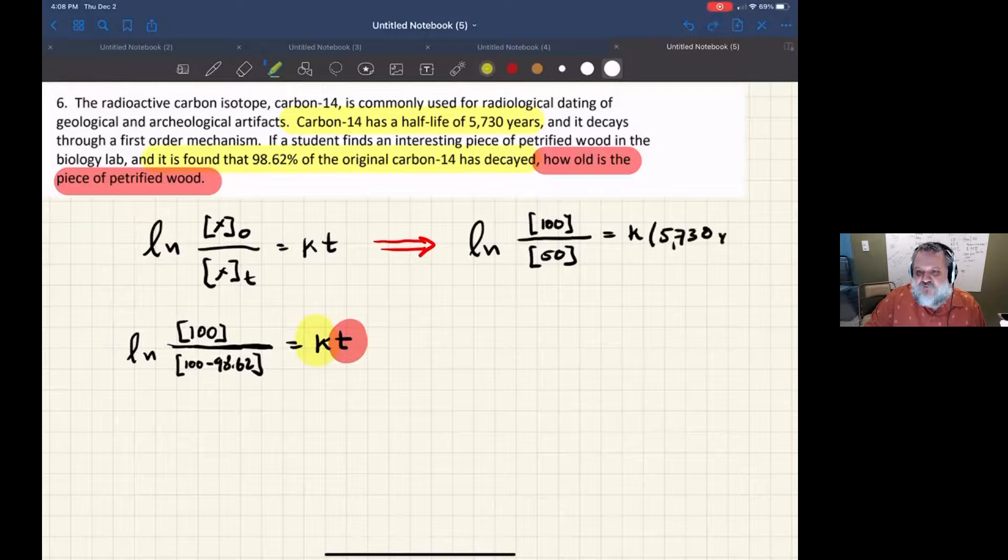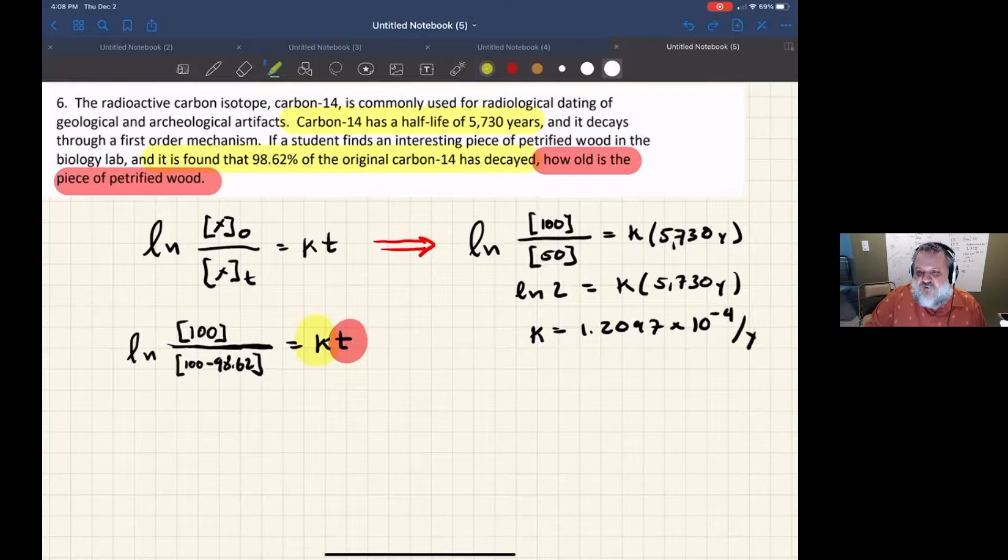Now I can solve: the natural log of 2 equals k times the half-life. This allows me to calculate that the rate constant is 1.2097 times 10 to the negative fourth per year.